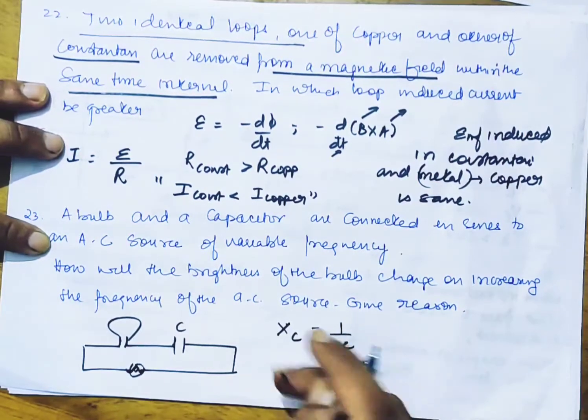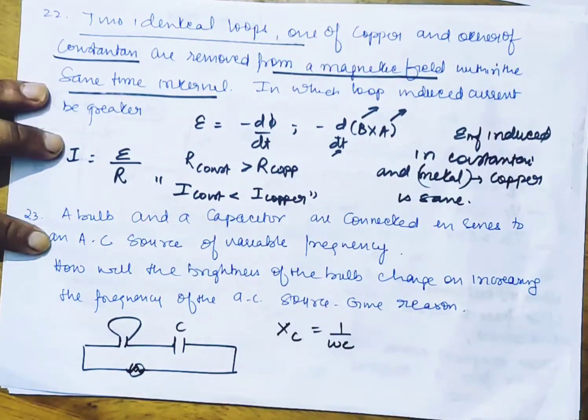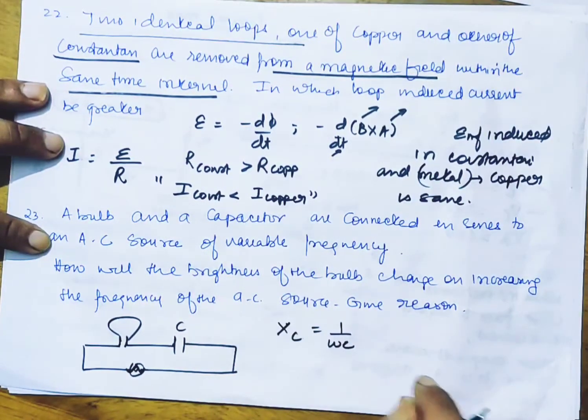The reactance of the resistor is independent. The current depends on the frequency, but inductor and capacitor are frequency dependent.